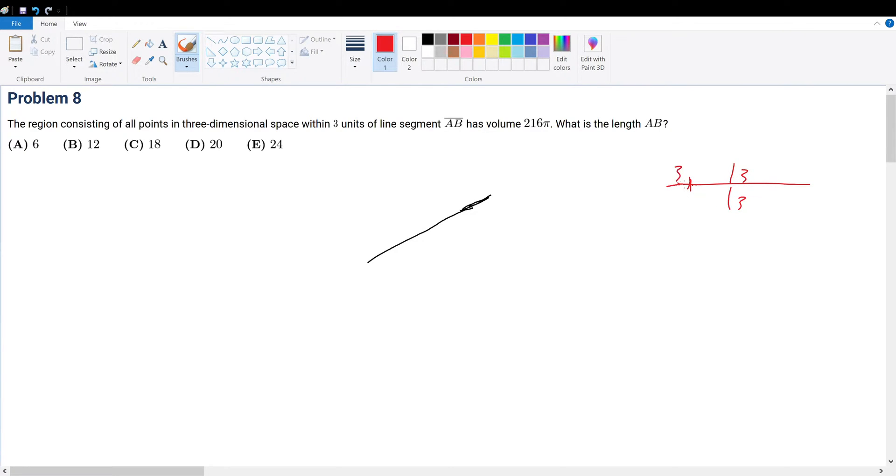This segment right here is three and this segment here is three. So in other words, we have this oblong-looking shape that is within three units. Now when you think of within a certain number of units, you should think of circles, right? Because all points on a circle are within the radius units to the center. So basically we're trying to find a bunch of circles here.